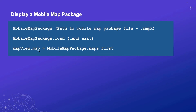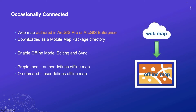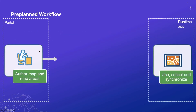So that's the single mobile map package file sideloaded down. We have another workflow which revolves around a more connected, or occasionally connected, scenario. You can point your runtime map at a web map and take that web map offline. These web maps are authored in ArcGIS Pro or ArcGIS Enterprise and published to ArcGIS Enterprise. They are downloaded by the runtime to a directory of your choice on your device. There are two ways to approach this: a preplanned workflow and an on-demand workflow. In the preplanned workflow, the author of the map also authors a selection of predefined map areas.